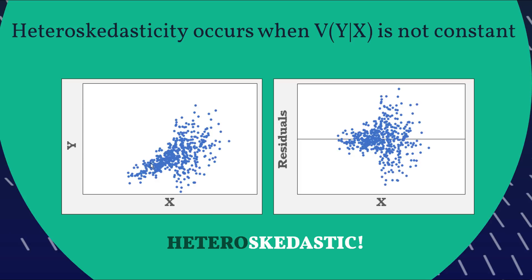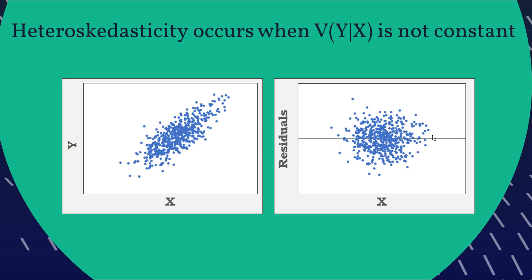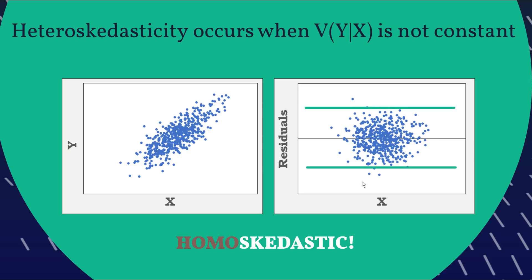Another example has roughly constant variance up to a point, and then it blows out after a certain value of X. That could happen in real life — say you're measuring a rocket and at some speed another engine engages, so after a certain point of X your variance blows out. In contrast, when you run a regression it's expecting what's called homoscedastic errors — a nice even spread of the error terms. So if our regression violates this, we're going to have problems.